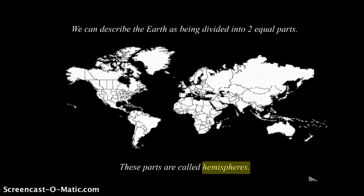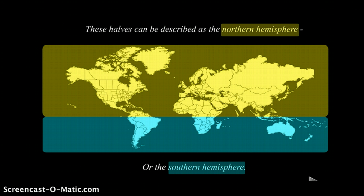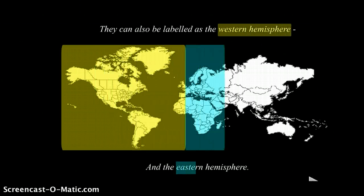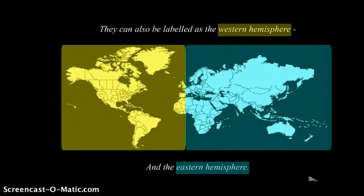We can describe the earth as being divided into two equal parts. These parts are called hemispheres. These halves can be described as the northern hemisphere, colored in yellow, or the southern hemisphere, colored in blue. They can also be labeled as the western hemisphere, colored in yellow, and the eastern hemisphere, colored in blue.